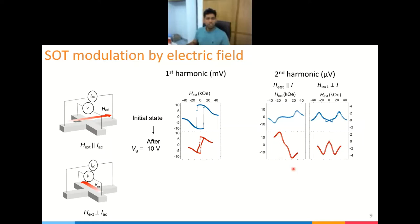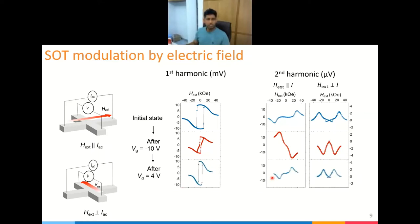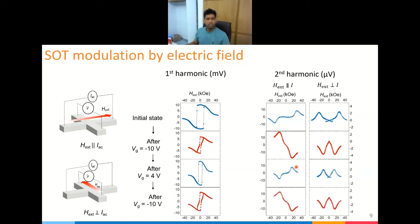Surprisingly, the second harmonic signal actually flips sign — instead of positive, it becomes negative in both parallel and perpendicular configuration. This type of harmonic Hall signal is seen in materials with a negative spin Hall angle, like tantalum. So we are seeing a negative spin Hall angle behavior in a platinum-cobalt system. Next, applying a positive gate voltage of 4 volts restores the second harmonic to positive, and applying negative voltage again flips it. By toggling the gate voltage, we can dynamically program the spin Hall angle in this system.